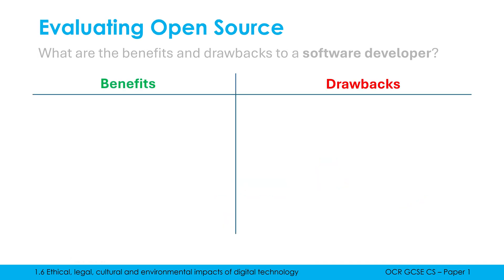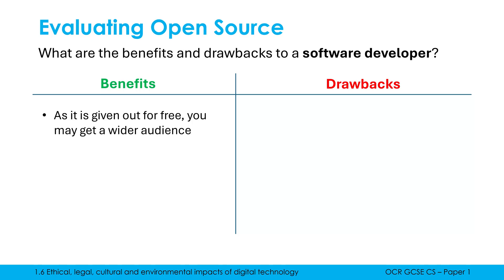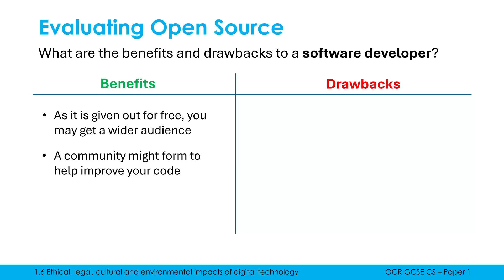This raises the question: why would a software developer like Google provide their competitors with open source software? It seems a little crazy, but there are benefits and drawbacks. For a developer choosing to put their source code online, one benefit is that because you're giving it out for free, you may get a wider audience. It's extremely hard to sell open source software — it's 99% of the time given out for free, though you might ask for donations. People like free stuff, so you may well get a bigger audience. Android is competing with iOS, so giving it out for free helps gain more users.